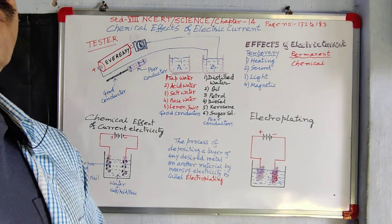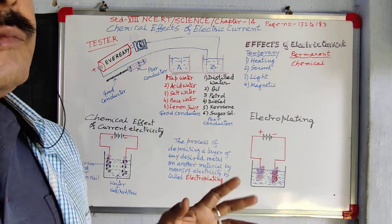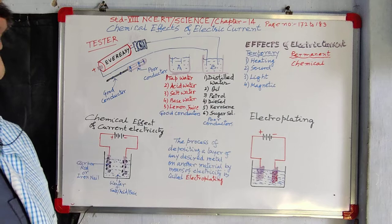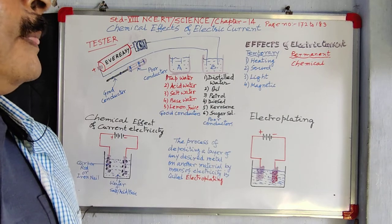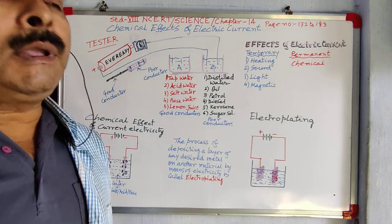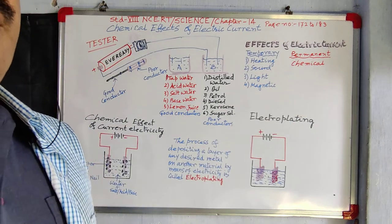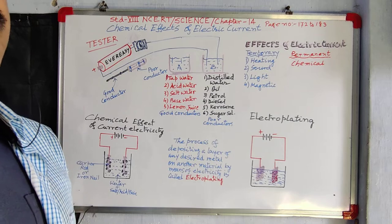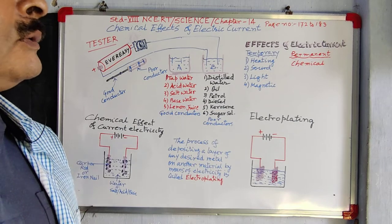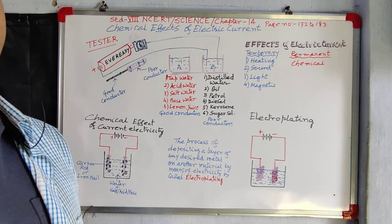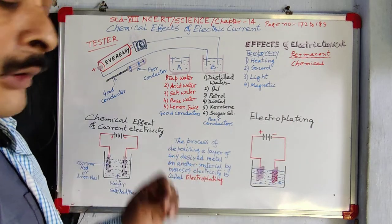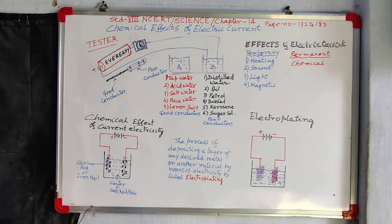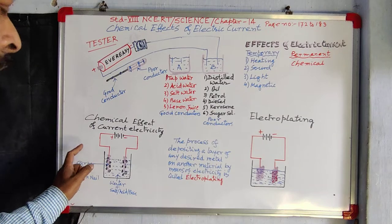With the bulb — electricity on, bulb giving light; electricity off, bulb comes to original position at the moment. But in the chemical effect, we cannot get the object or material back to its original state on the spot. So this is a permanent effect. Chemical effect is a permanent effect.